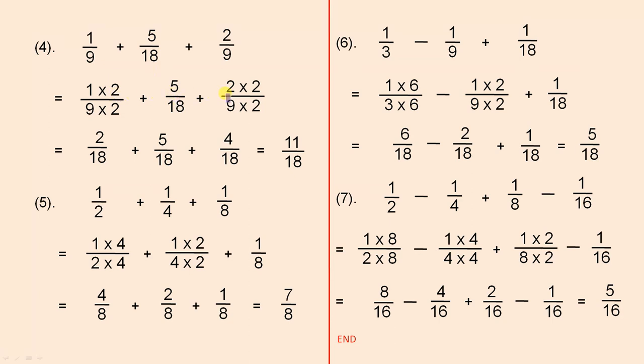So the 1 over 9 is multiplied by 2 over 2, and the 2 over 9 is multiplied by 2 over 2. So that gives us 2 over 18 plus 5 over 18 plus 4 over 18. And that's 11 over 18.